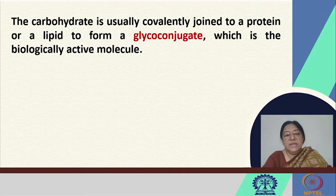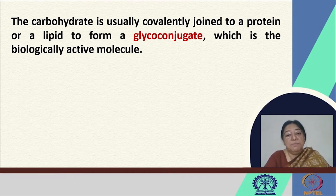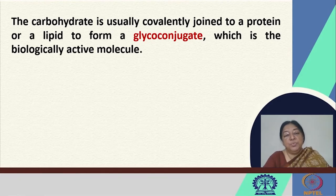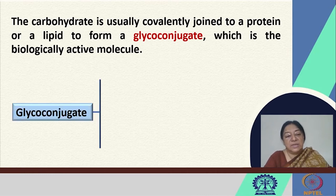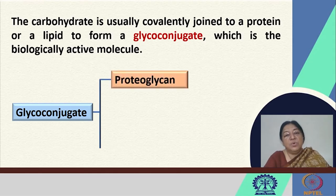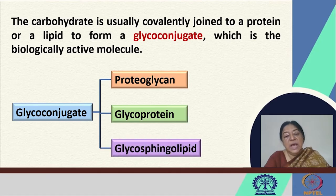The carbohydrate is usually covalently joined to a protein or a lipid to form what is called a glycoconjugate. We had seen some of these glycoconjugates when we looked at the lipid interactions or the proteins that were part of the membrane—the integral and the peripheral types. When we form a conjugate with a carbohydrate, we call this a glycoconjugate, which can be a glycoprotein or a glycolipid. Specifically, a glycoconjugate can be a proteoglycan, a glycoprotein, or a glycosphingolipid.